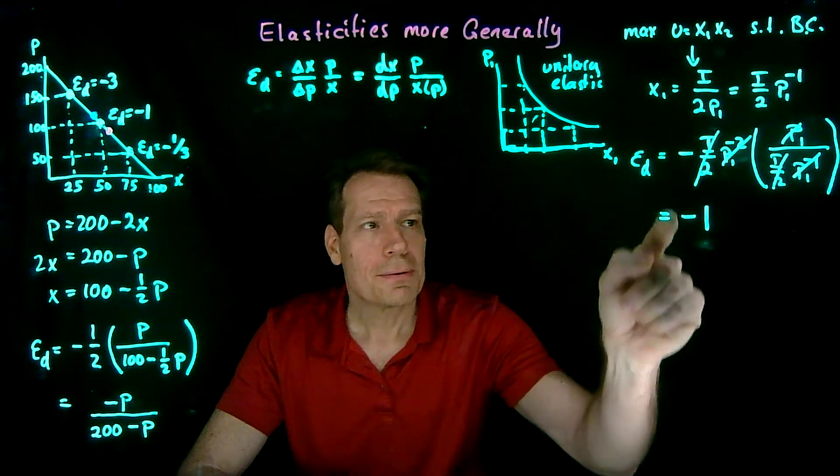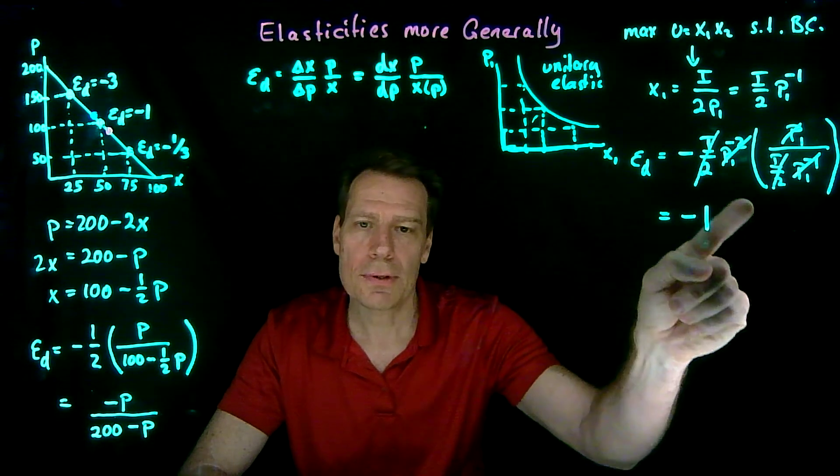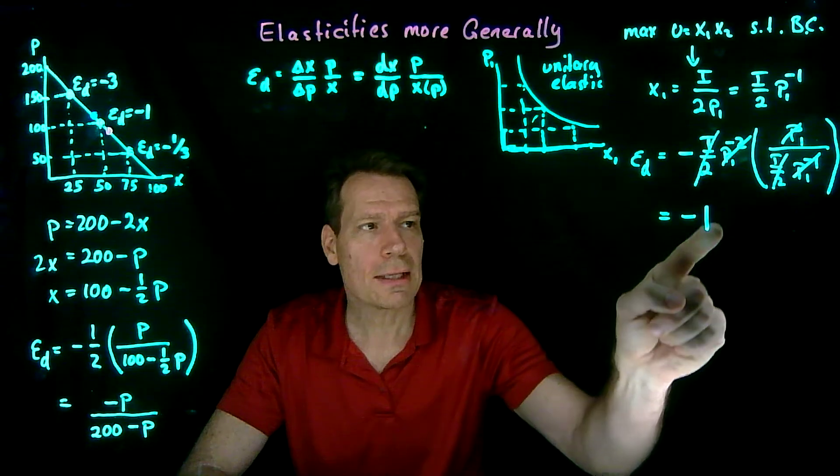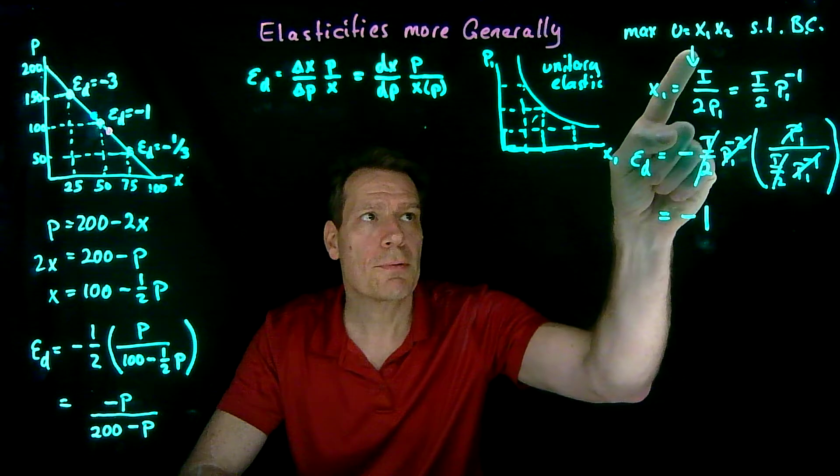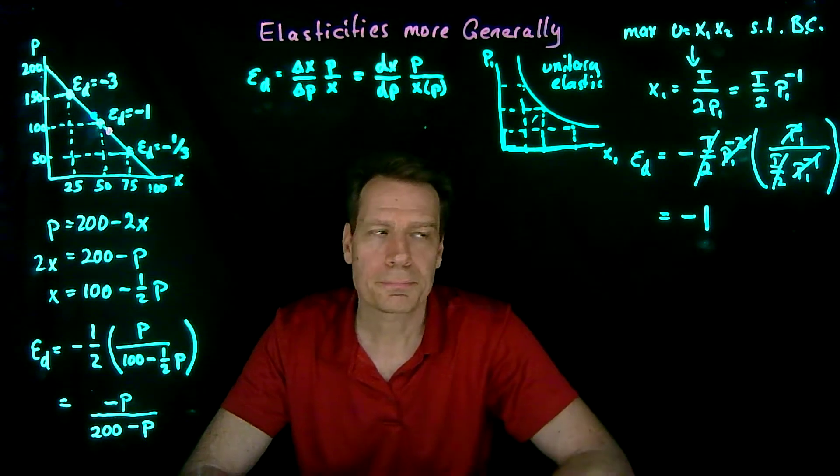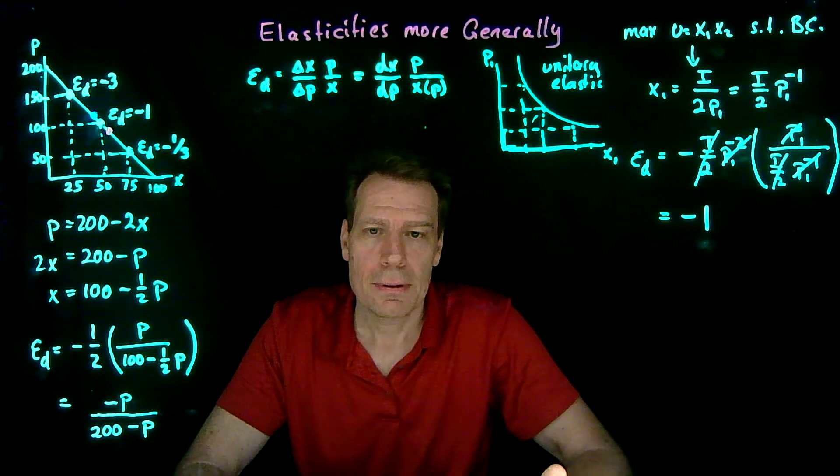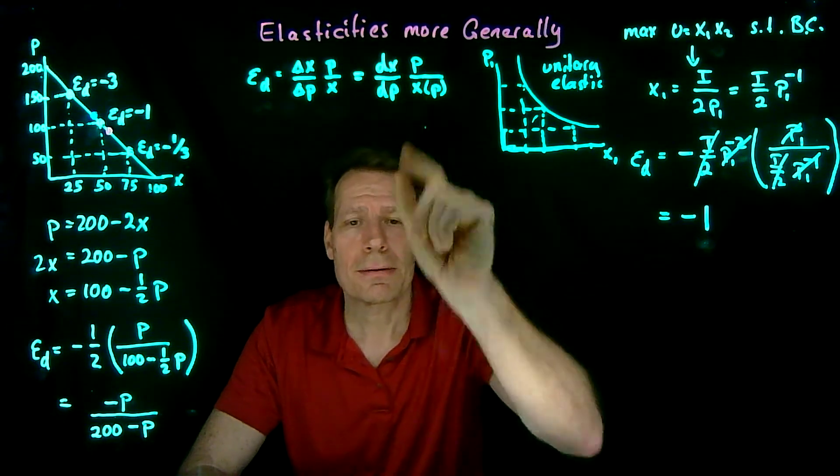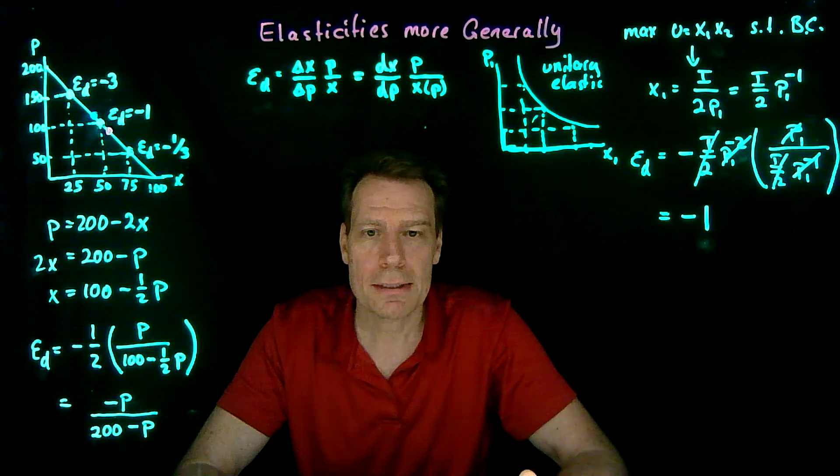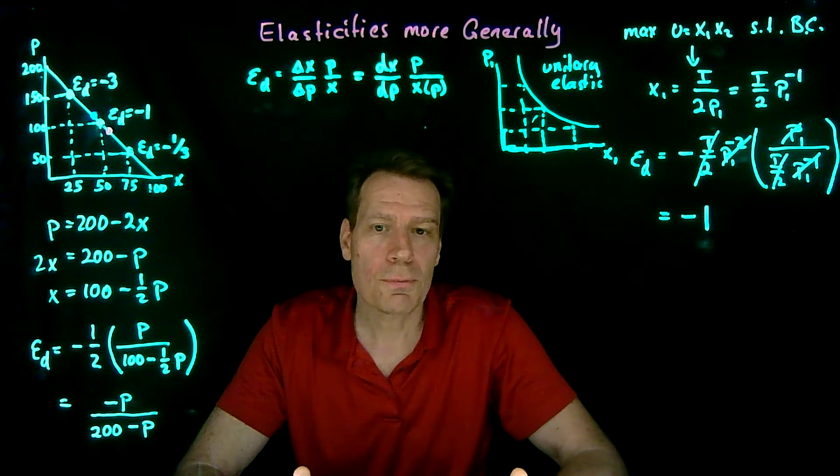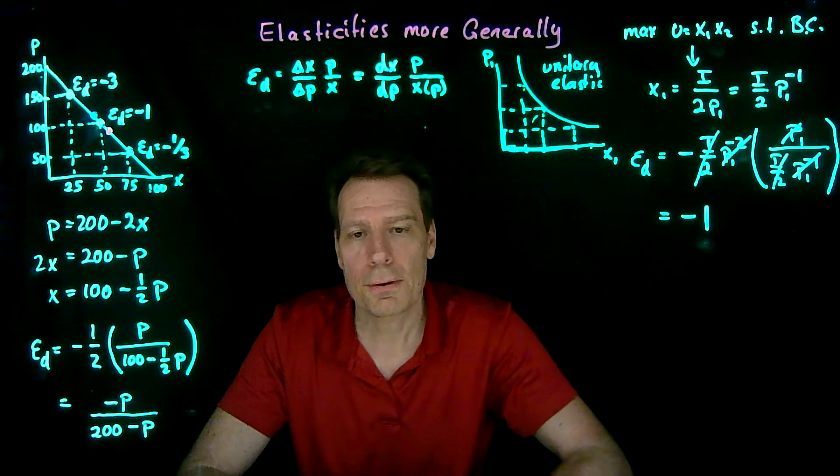Of course, had we used a different utility function, we'd get a different demand function, and that would give us a different expression for the elasticity of demand. This unitary elasticity is a special case that emerges from indifference maps that can be represented by Cobb-Douglas utility functions. So we now see that we can take any demand function and just use this method to calculate an expression for the price elasticity that allows us to plug in different prices and figure out what elasticities are at different points, or that give us a single elasticity that's true along the entire curve.